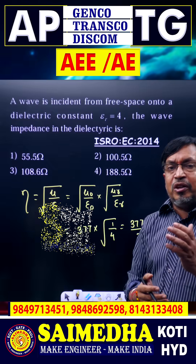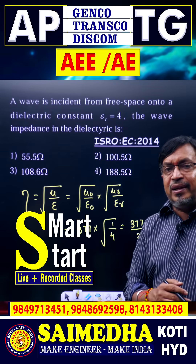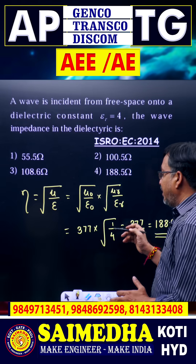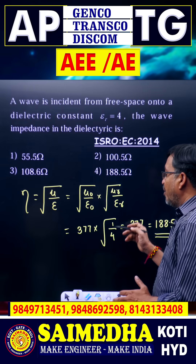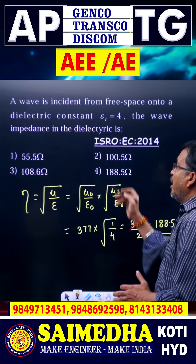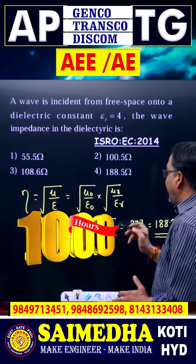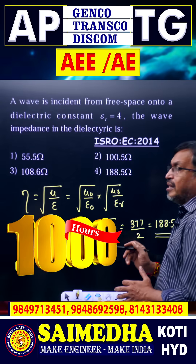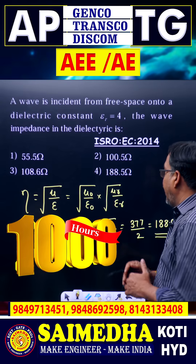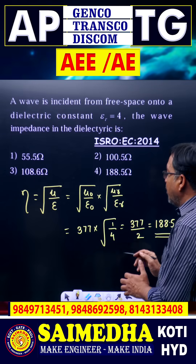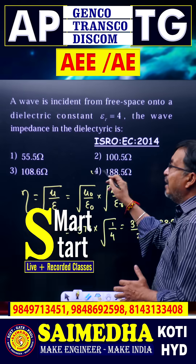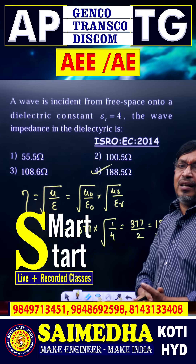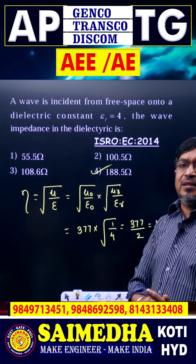Here, the square root of mu-not by epsilon-not is 377 ohms. So eta equals 377 multiplied by the square root of 1 by 4, since epsilon r is given as 4. Therefore, eta equals 188.5 ohms in the dielectric medium. Hence, option 4 is the correct answer.